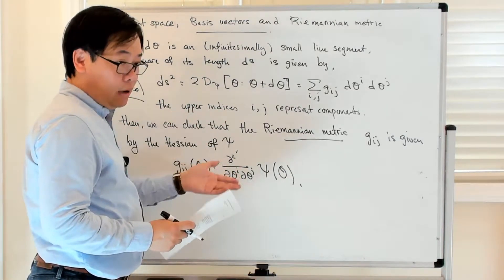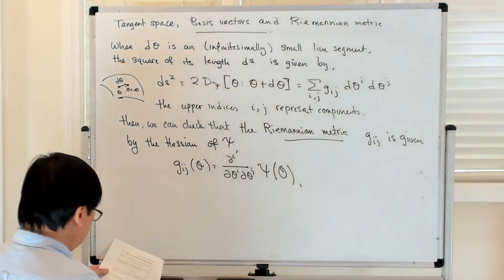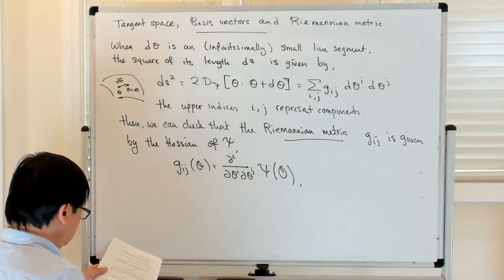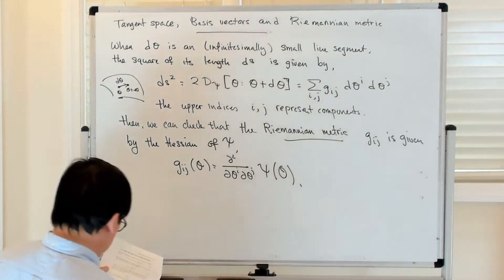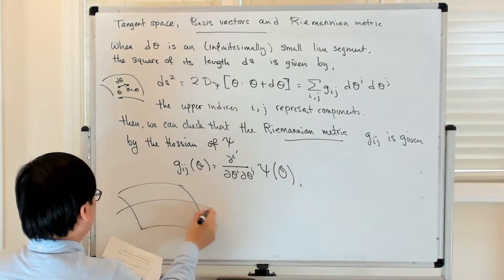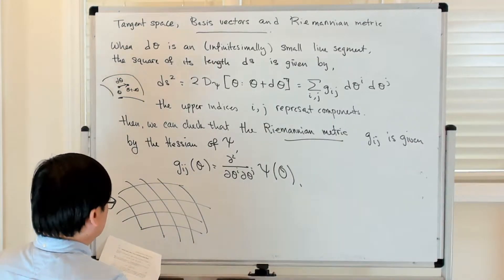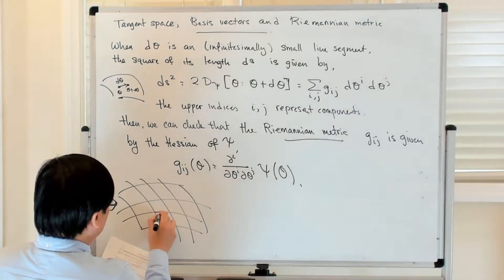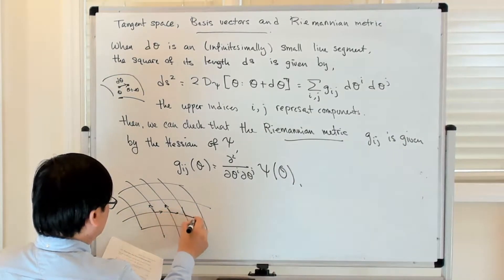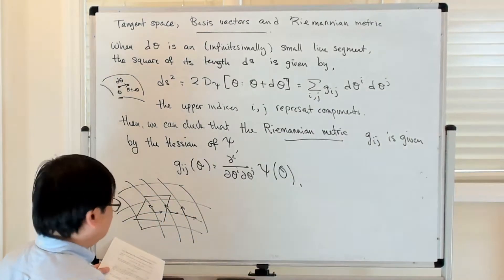The assumption is that this Hessian is positive definite. Now, let's say you have some coordinate system. You can imagine tangent vectors to that coordinate system as giving you a basis for the tangent space at a given point.